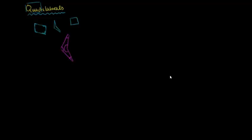The main subdivision of quadrilaterals is between concave and convex quadrilaterals. The way I remember concave quadrilaterals — or really concave polygons of any number of shapes — is that it looks like something has caved in. So, for example, this is a concave quadrilateral; it looks like this side has been caved in.